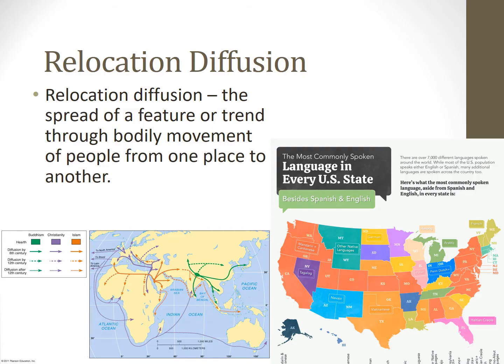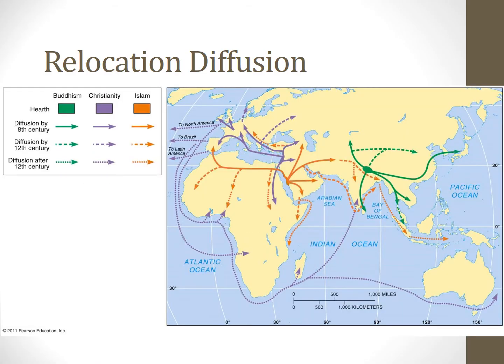We'll start with relocation diffusion. This is the spread of a feature or trend through bodily movement of people from one place to another. So when people migrate, they bring their culture with them. We can look at where religions are practiced — notice the diffusion of Buddhism, Christianity, and Islam. We see where they began, their hearths. But missionaries brought their religion to new people, and through conquest and colonization, foreign countries brought their religion to new places. That is relocation diffusion.